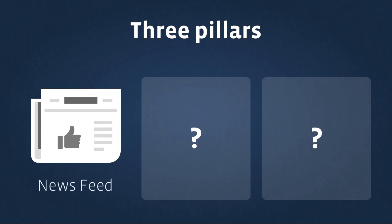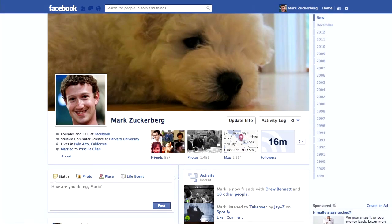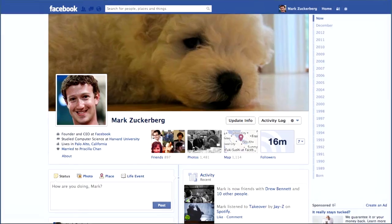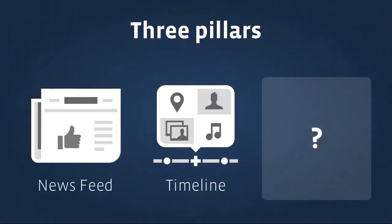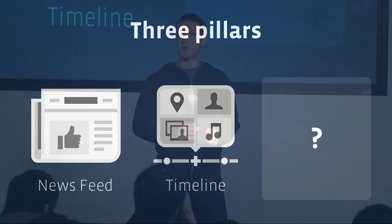Another really common query that people want to do is: who is this person? Tell me their story, tell me something about them. And that's Timeline. So those are the first two pillars of the Facebook product ecosystem, and today we're going to talk about the third.